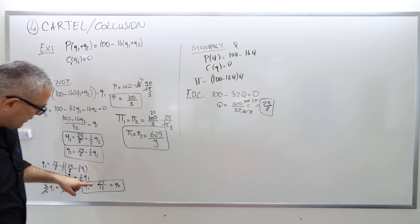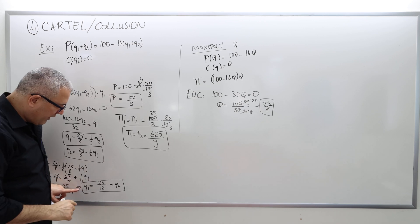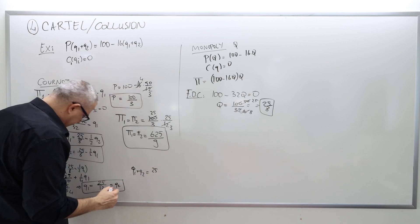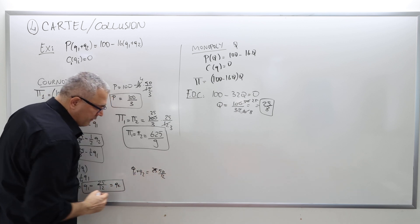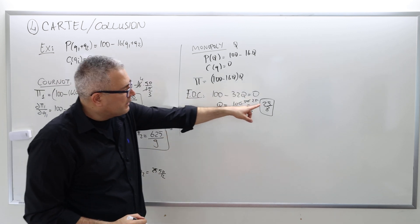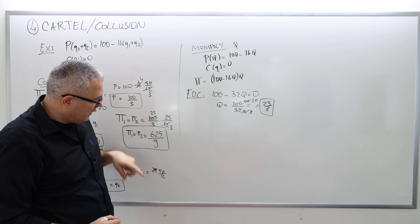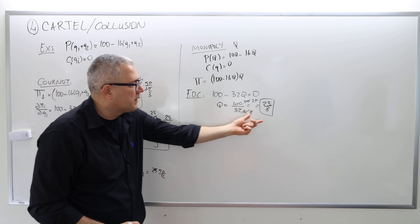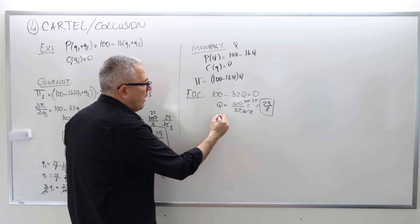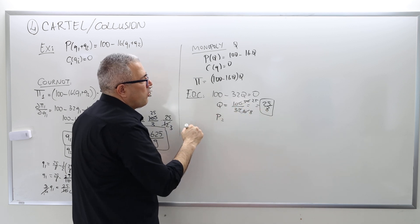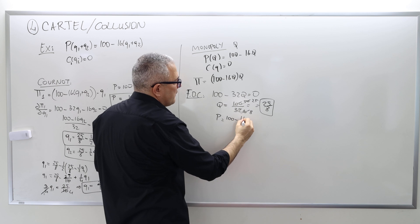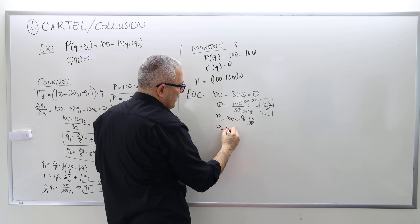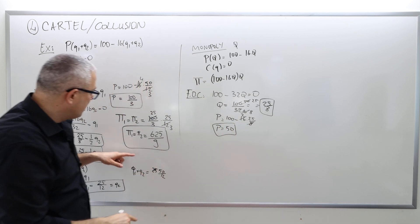In the Cournot case, total output Q1 plus Q2 was 50/12. Here, the monopoly output is 25/8, which is larger — so they produce more under Cournot than under monopoly. The monopoly price is 100 minus 16 times 25/8, which equals 50, clearly higher than the Cournot price of 100/3.